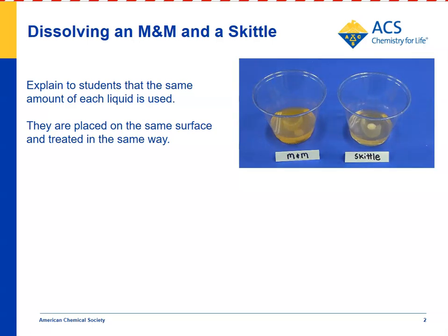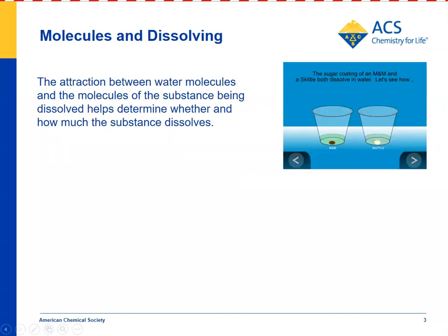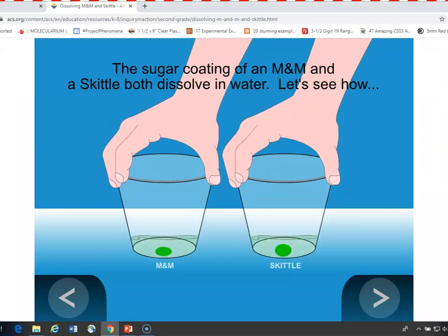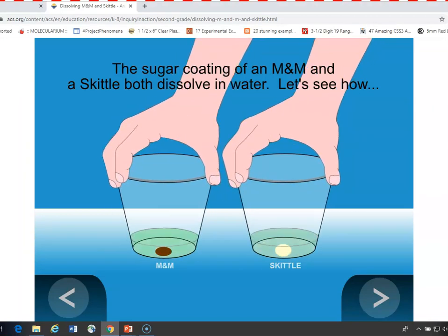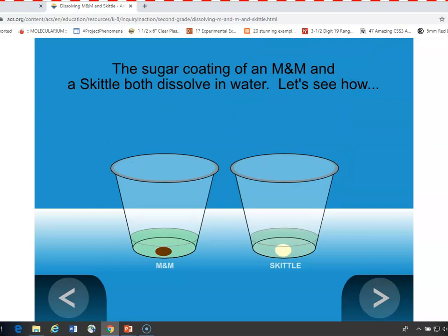You want students to continue swirling until they can see whether the chocolate of the M&M dissolves or whether the white material of the Skittle dissolves. What they'll see is that more of the inside of the Skittle dissolves than the inside of the M&M. Here we have students swirling a Skittle and an M&M, and eventually they'll see that they end up with the brown part of the M&M — which they'll know is chocolate — and the inside of the Skittle, which they won't really know what that is.